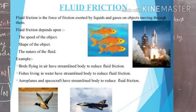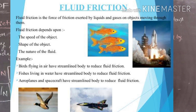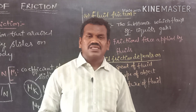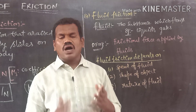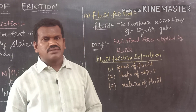Number three: nature of the fluid. As the nature of the fluid differs, the frictional force also differs. For example, water applies more frictional force compared to air, because the distance between molecules is different in water compared to air. So we have discussed four types of frictional forces: static friction, rolling friction, sliding friction, and fluid friction. In the next videos, we are going to discuss how to increase and decrease friction, the uses of friction, and what happens if friction disappears. Thank you.